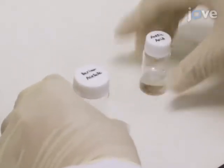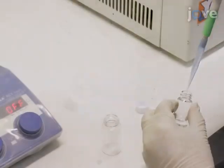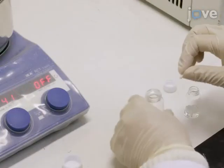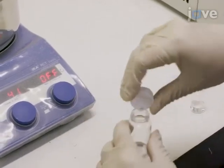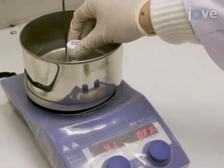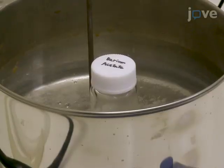Then combine 127.7 mg of barium acetate and 830 microliters of acetic acid. Heat the mixture to 40 degrees Celsius and stir for 5 minutes to dissolve the barium acetate.